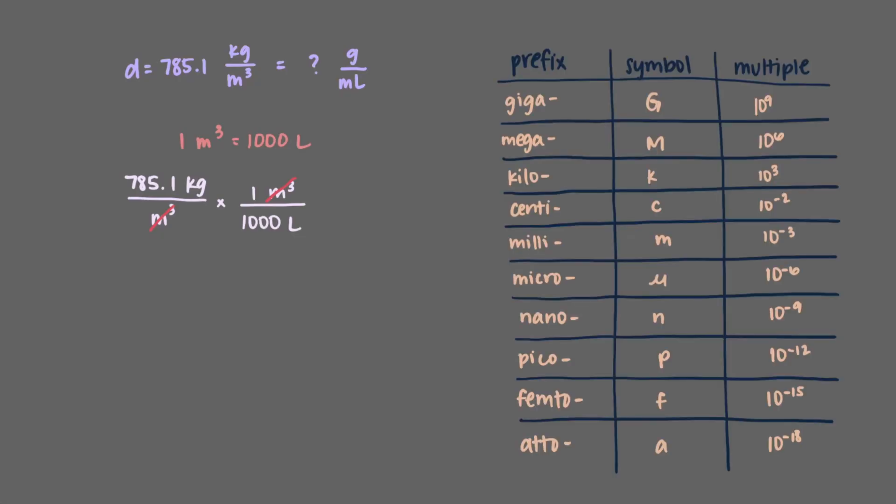We'll use the density of ethanol in kilograms per meter cubed for the next example. The density of ethanol is 785.1 kilograms per meter cubed. Let's work together to convert this density to grams per milliliter. We're given that one meter cubed is equal to 1,000 liters, so we'll start with that conversion. The meters cubed cancel out and now we have liters, but we want the volume to be expressed in milliliters. From the earlier problem and the table, we know that there are 1,000 milliliters in one liter, so we'll do that conversion next. Our goal was to express the volume in milliliters, which we've just done.